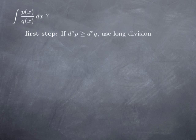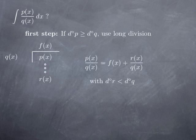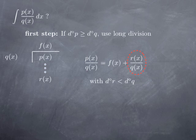The first step is to check that the degree of the numerator is less than the degree of the denominator. If it is not, we must use long division first. We divide P by Q to obtain a quotient f(x) and a remainder r(x), stopping when r(x) has degree less than Q(x). This rewrites P(x)/Q(x) as a polynomial f(x) plus r(x)/Q(x), where the degree of the top is now less than the degree of the bottom.